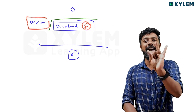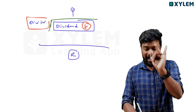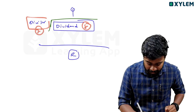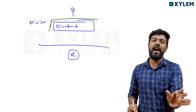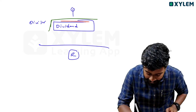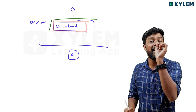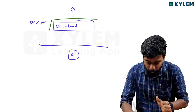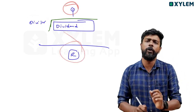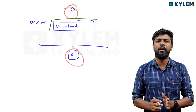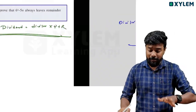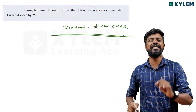Here, r is equal to 1. The remainder is equal to 1. Which means the dividend is equal to divisor into quotient plus remainder, and that remainder is equal to 1. So this logic gives us the answer.